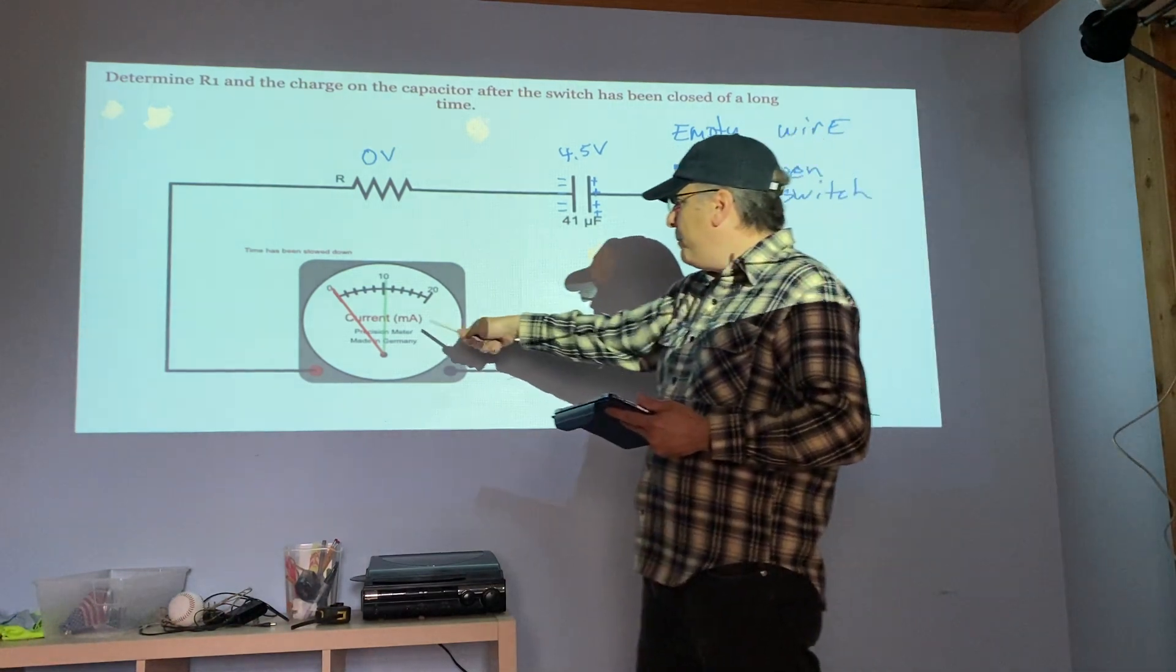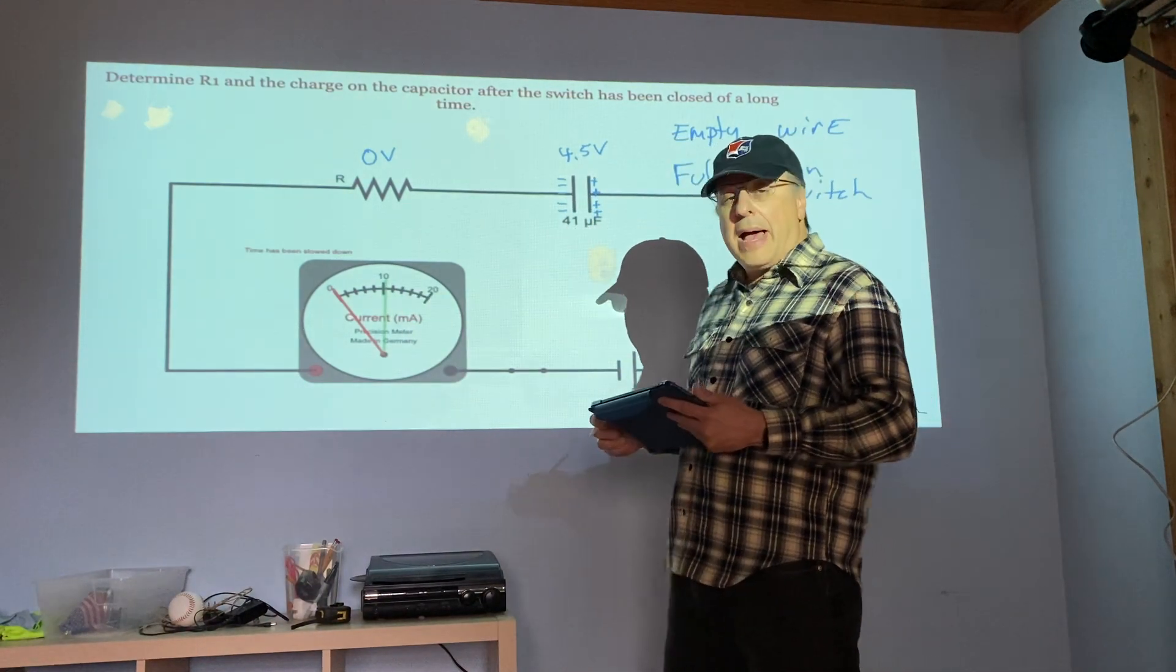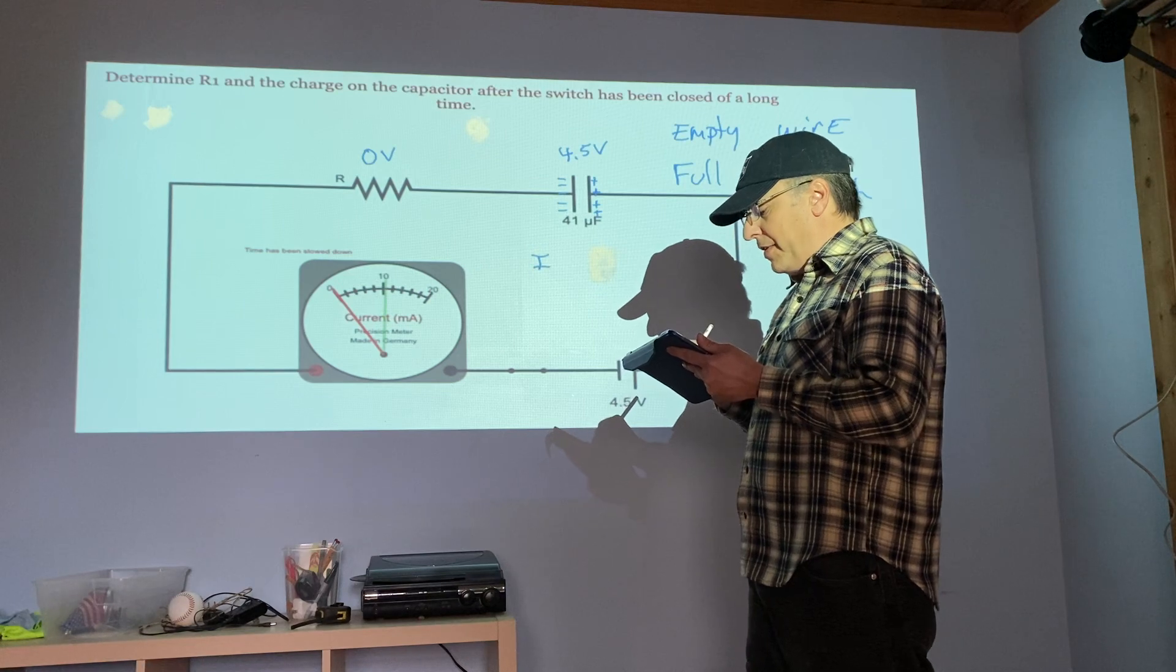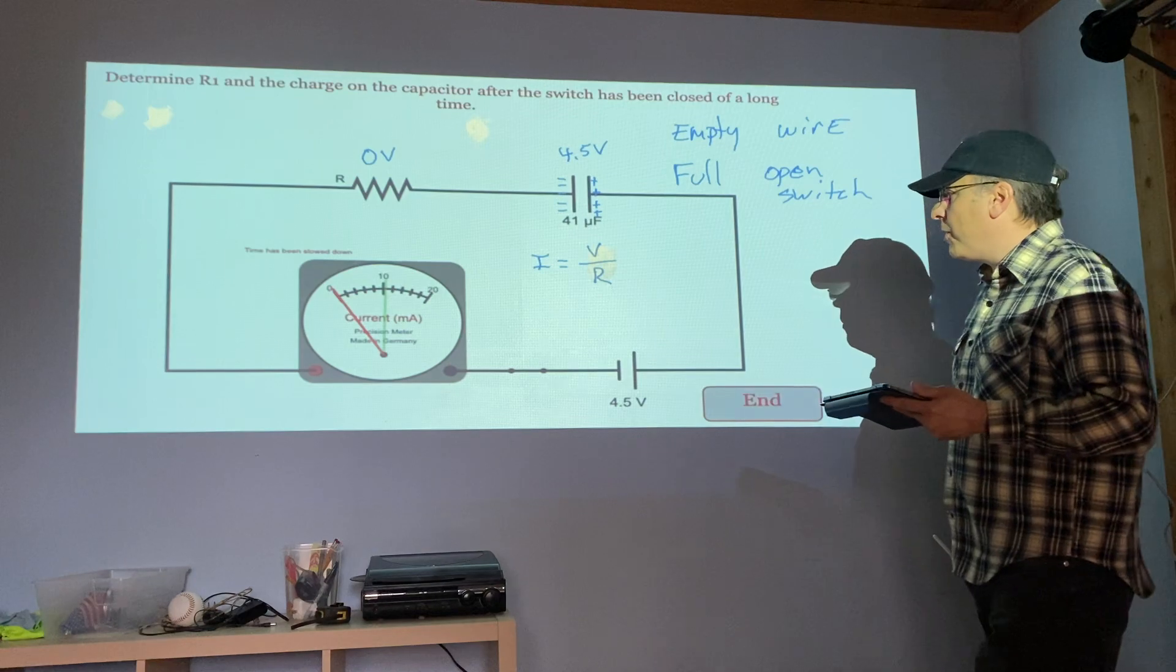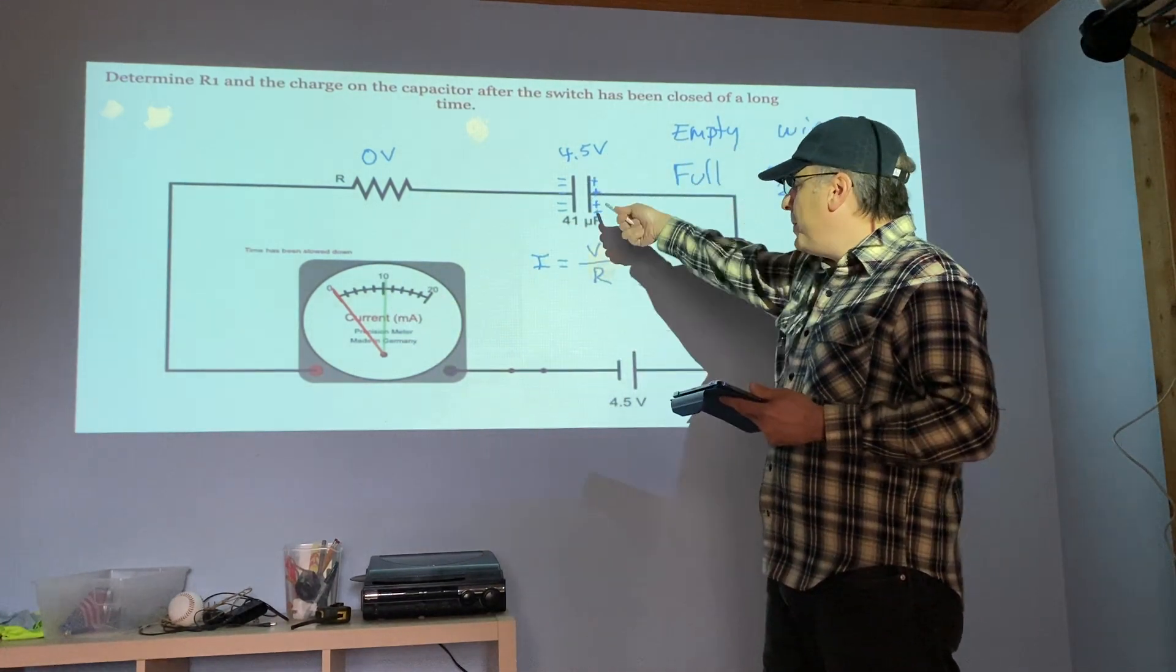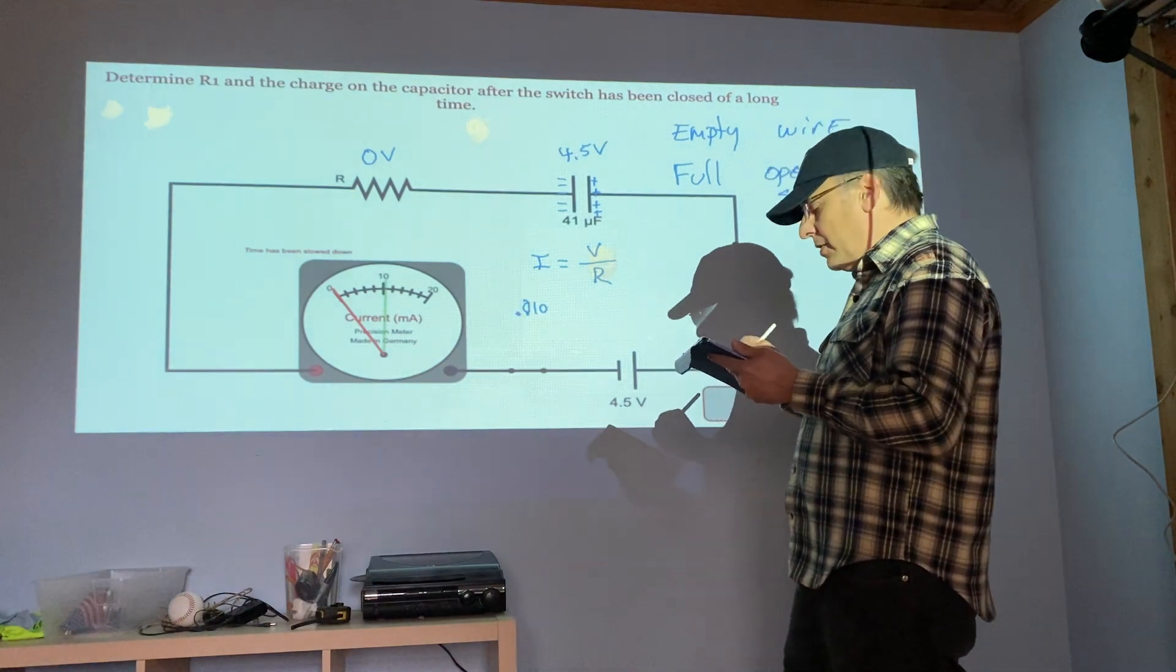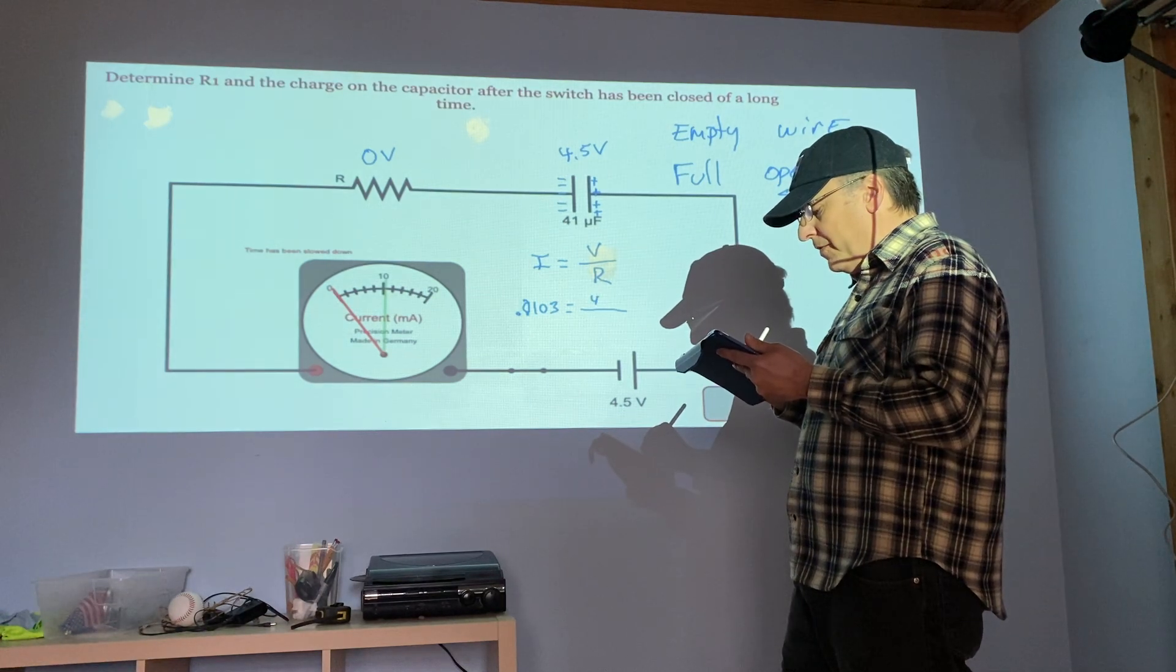You'll notice it left behind this green marking on the current meter, that is the maximum current. That's when it was uncharged, when it was acting like a wire, and we can use that to figure out the resistance in our circuit. So we do I equals V over R. The I is the maximum current before the capacitor got any charge on it. I can see that's a little more than 10 milliamps, so 0.013. The voltage was 4.5.